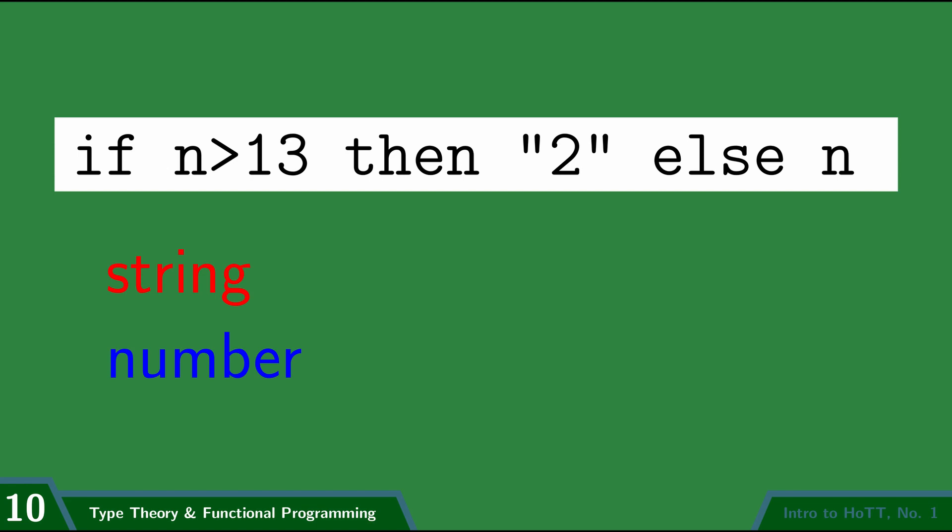Consider this example, which is a distilled version of the bug from the last video. If n is greater than 13, then quotation marks 2, else n. We said that this code was ill-typed because quotation marks 2 is a string, whereas n is a number.